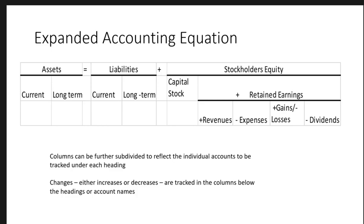Here is what we refer to as the expanded accounting equation. We've broken assets into current and long-term, broken liabilities into current and long-term, and broken stockholders' equity into capital and retained earnings. Under retained earnings we've placed revenues, expenses, gains and losses, and dividends. Gains and losses are placed in the same column to make it a little easier to work with.